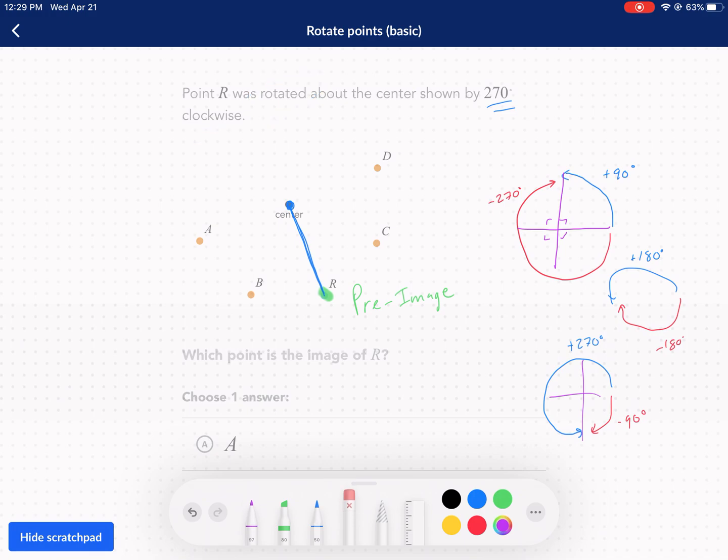So 270 clockwise. 270 clockwise, well, we already determined this. 270 clockwise is this one right here. It's the same thing as 90 degrees counterclockwise.